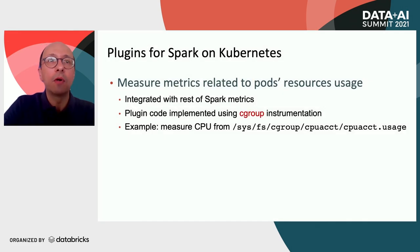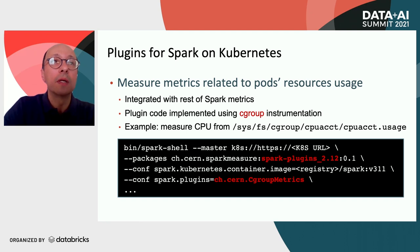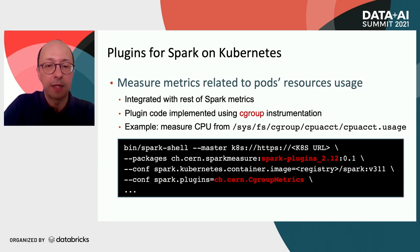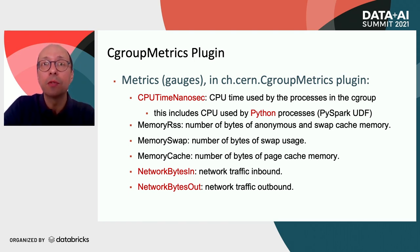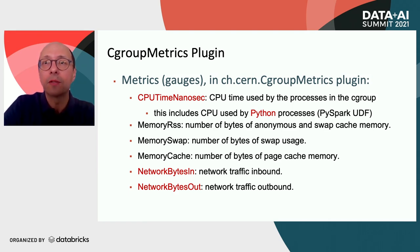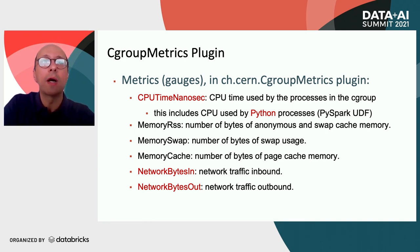Here is an example of a more interesting plugin that you may find useful when running Spark on Kubernetes. The plugin reads workload data from cgroup instrumentation and emits metrics with the pod resource usage. The metrics reported by this plugin are CPU, memory, and network IO. Measuring CPU usage this way is useful as it gives information on CPU use by the JVM and possibly other components running in the pod — for example, Python UDFs when using PySpark. Network throughput metrics are also quite useful as they give information on remote IO and shuffle workload.